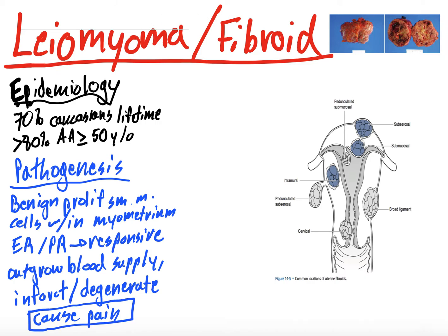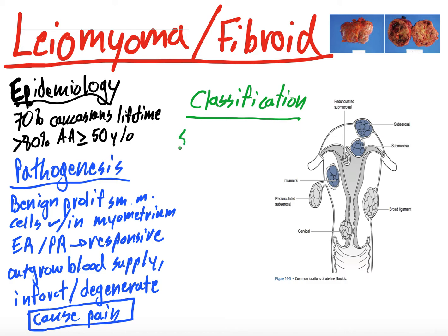Classifying them — I included a picture from the OB-GYN Blueprints book rather than a drawing. The picture in the top right corner shows what these look like: benign smooth muscle growths, often circular but not always. So for classification: they can be submucosal, which means they're deep to the endometrium but right on top of the myometrium. These ones often have heavy bleeding because they're so close to the endometrium.